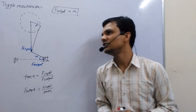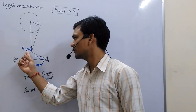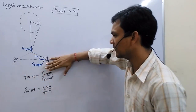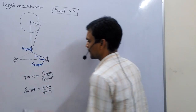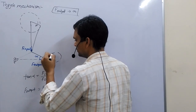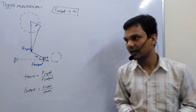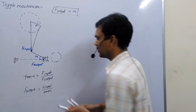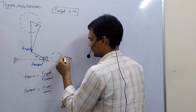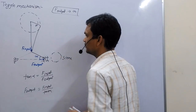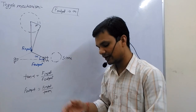Then this angle tends to zero and F output tends to infinity. Toggle Mechanism is used to produce more force from less force, or more effort from less effort. It is used in railways to break rails or in stone crushing pressure applications.